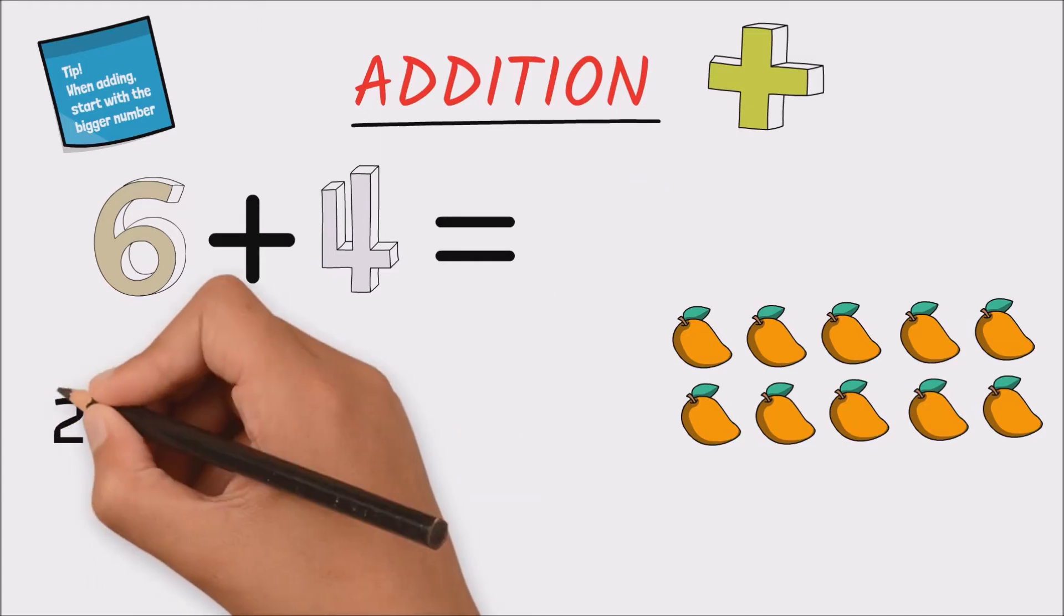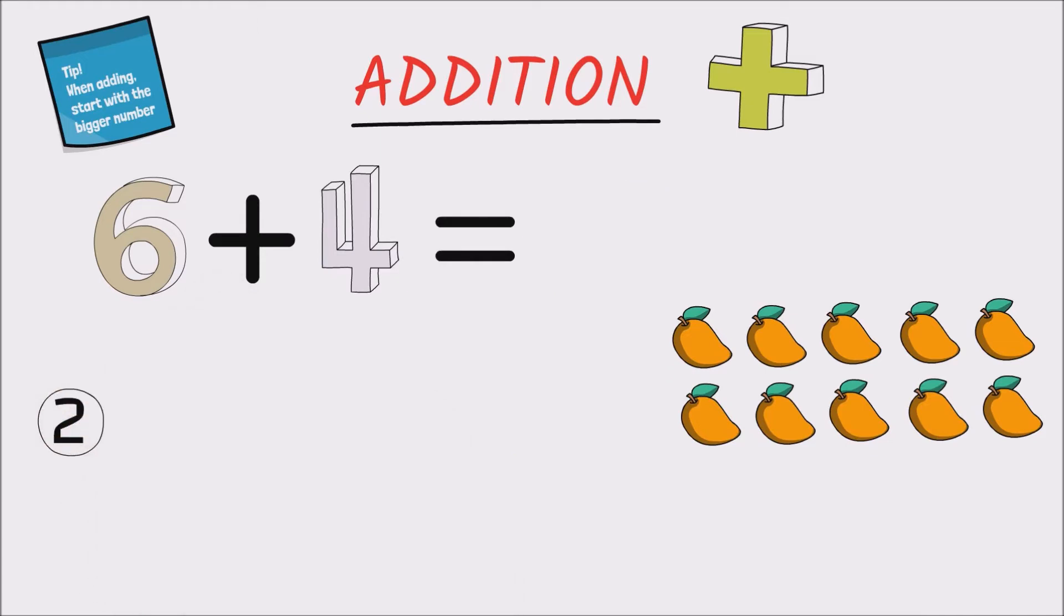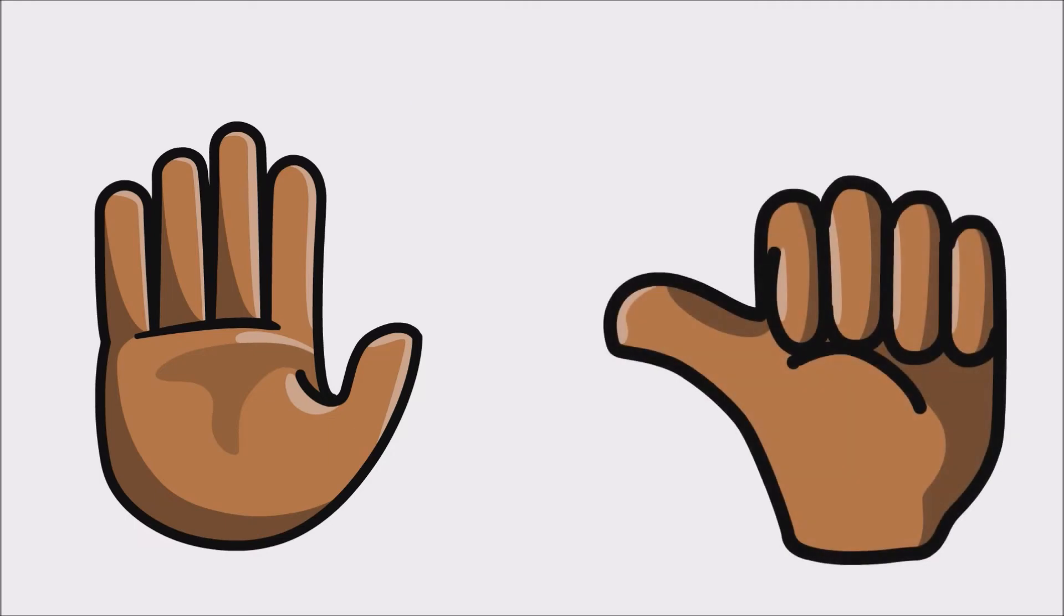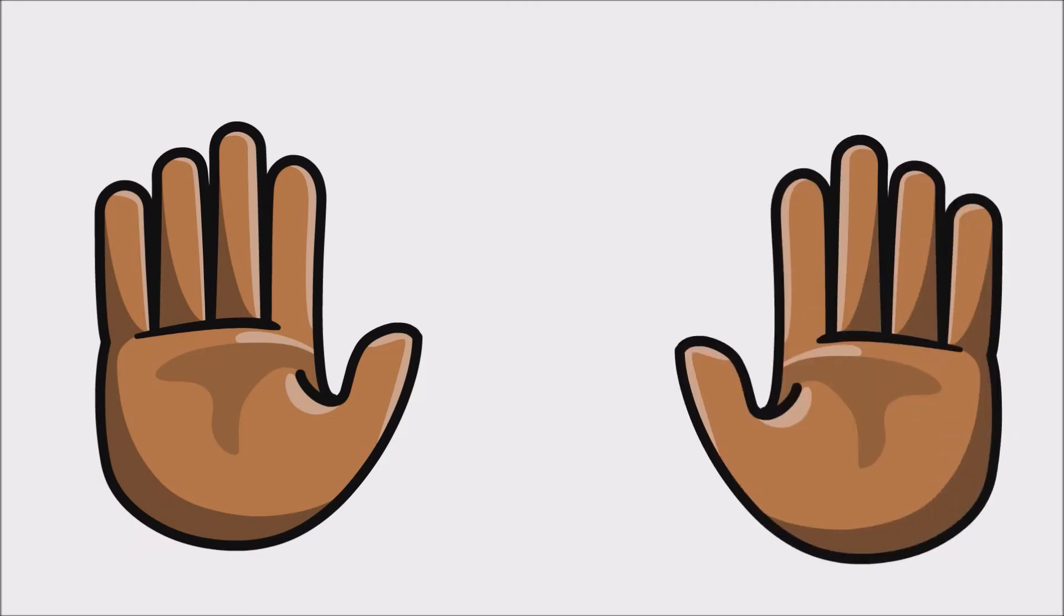Let's try another method. Again using our fingers, we start with the bigger number, so we put up six fingers. Then we add four more fingers, but instead of starting from one, let's start by counting from six. So from six we would go seven, eight, nine, ten.